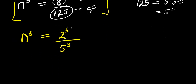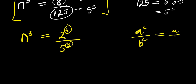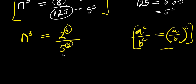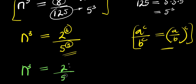Now, if you observe the exponents here are the same. If you have a to the power c divided by b to the power c, this equals a divided by b, raised to the power of c. Applying this right here, that means we simply have n³ equals 2 divided by 5, all to the power of 3.